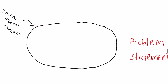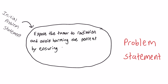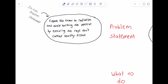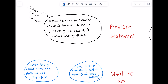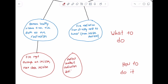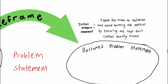Here's the initial problem statement the doctors explored: expose the tumor to radiation and avoid harming the patient by ensuring the rays don't contact healthy tissue. The doctors began creating what would later be called a Dunker diagram. Some options they came up with for 'what to do' were: remove the healthy tissue from the path of the radiation, or fire x-rays from directly next to the tumor — in other words, from inside the patient. For specific steps, they came up with cutting open the patient to fire the rays, having the patient swallow a radiation device, or inserting a radiation device through an opening. Next, the doctors reframed their original problem statement — pause the video and try writing their new problem statement in the form of 'make it okay without solving the initial problem statement.'